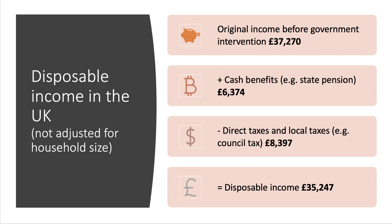Putting some numbers on that process for 2017: original income was £37,000 per household, though not adjusted for household size. The average household received over £6,000 in cash benefits, but the government took over £8,000 in direct and local taxes, giving a figure for disposable income of £35,247.